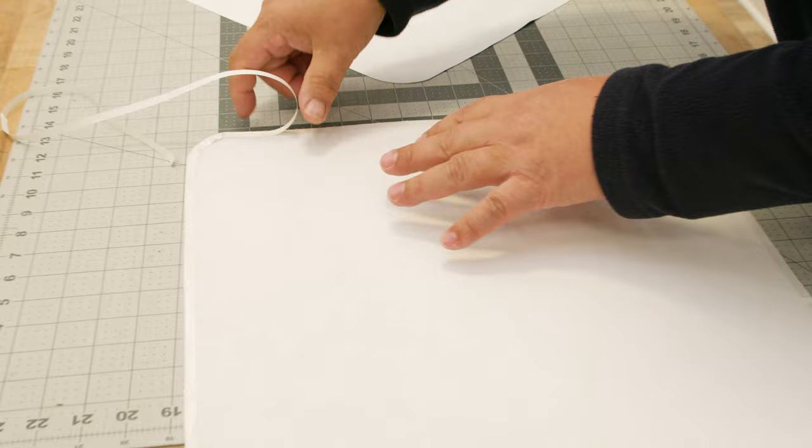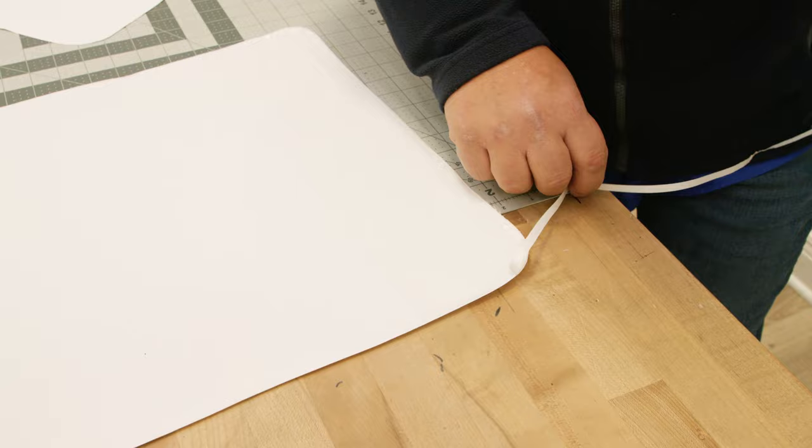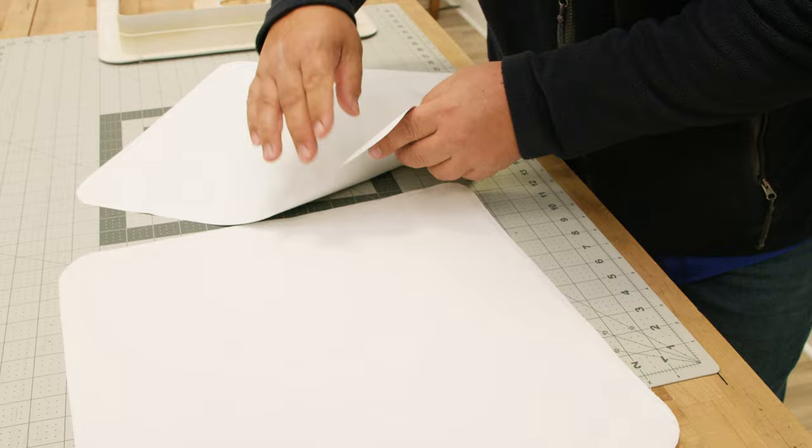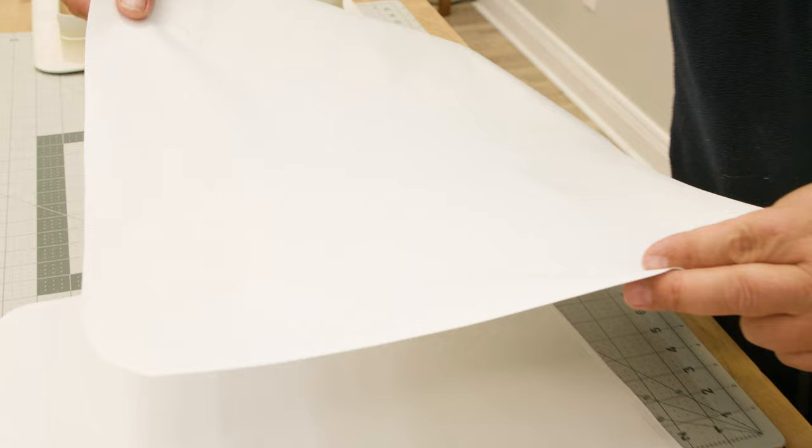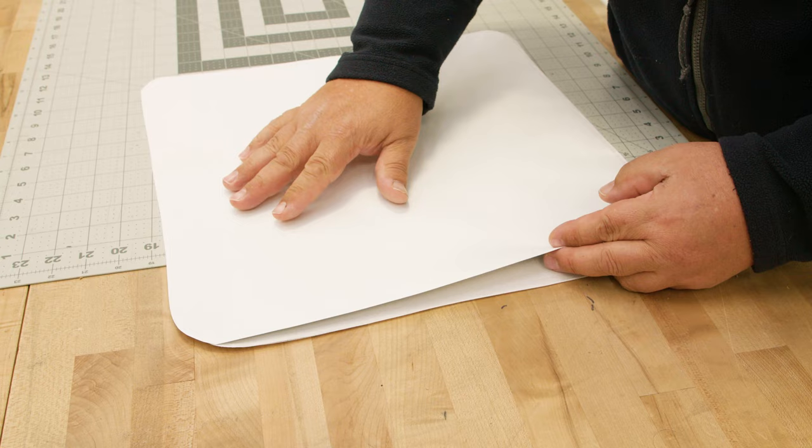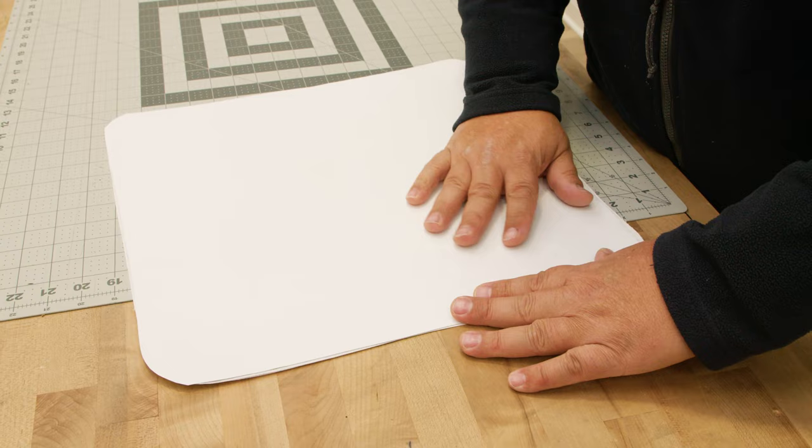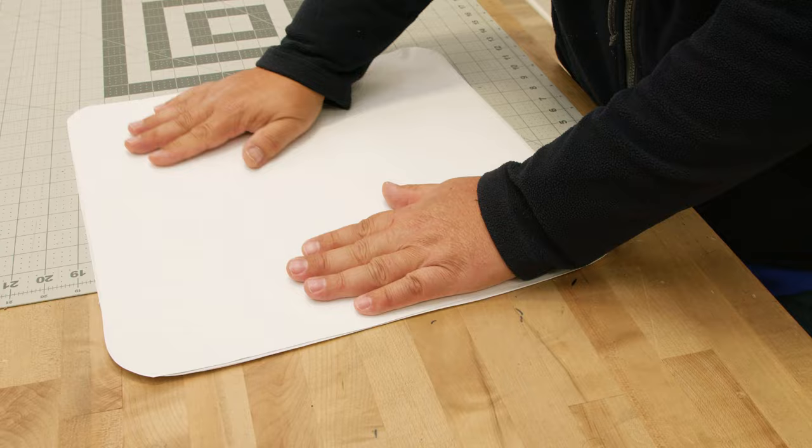We'll peel off the transfer paper revealing the glue. The blackout fabric has a kind of felty side and a smooth side. You can put either side up or down, it doesn't really matter. I'm going to put the felty side down towards the Sunbrella. If your edges are off a little bit don't worry, the binding is going to cover that all up. But you definitely want it nice and flat.